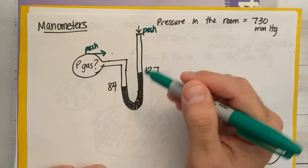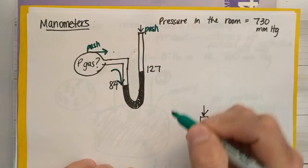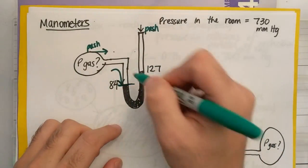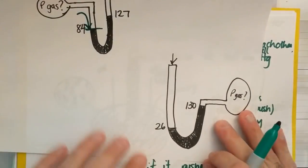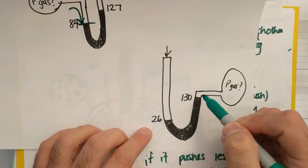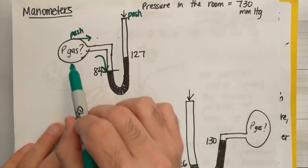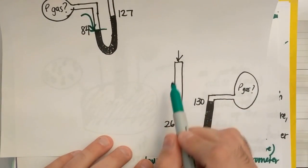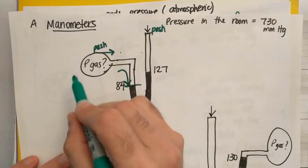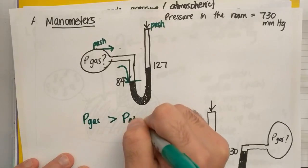Since I see that my gas pressure is pushing more — and I know that because this level is lower than that level — the gas is pushing this mercury up against the atmospheric pressure. As opposed to the second manometer, where the air is pushing more the other way. So this gas is pushing more against the atmospheric pressure, whereas in the other case, the atmospheric pressure is pushing more against the gas. In this first event where the gas is pushing more, P of the gas is going to be greater than P of the atmospheric pressure, also called P of the room.